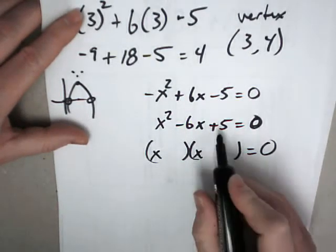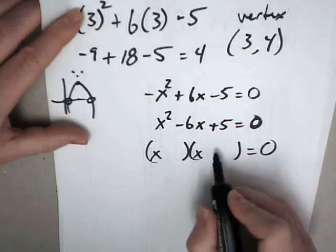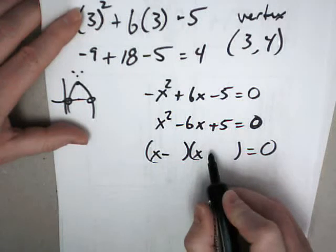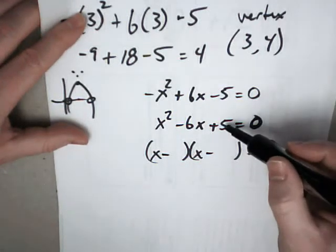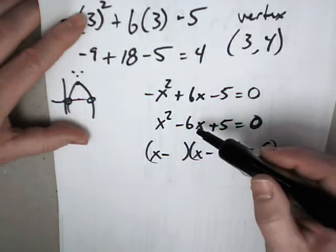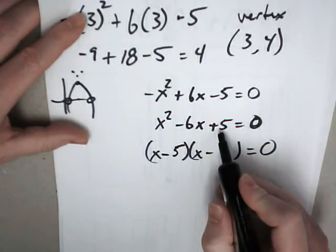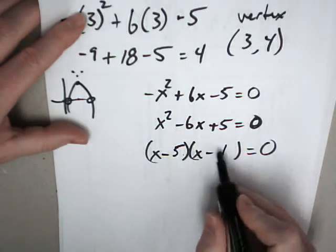Then I can factor this. This is positive, which means both signs are the same. This is negative, which means they're both negatives. So factors of 5 that would give me 6, that's 5 and 1. 5 plus 1 is 6.